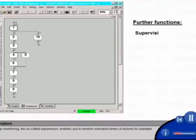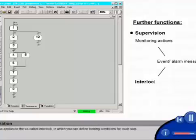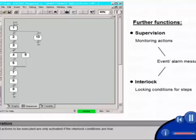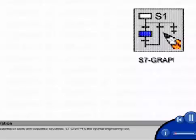The step monitoring, the so-called supervision, enables you to monitor execution times of actions, for example. In case of an error, the step remains active. However, it is not switched to the next step. The event can also be easily generated as event message or alarm message. This also applies to the so-called interlock, in which you can define locking conditions for each step. Here, all actions to be executed are only activated if the interlock conditions are true.